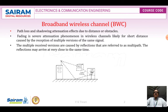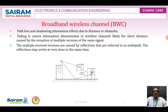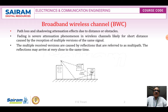Fading is the attenuation phenomenon in wireless channels, likely for short distances, caused by reception of multiple versions of the same signal. These multiple received versions are caused by reflections from buildings and other obstacles, or maybe because of scattering.